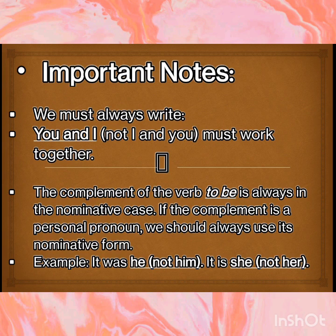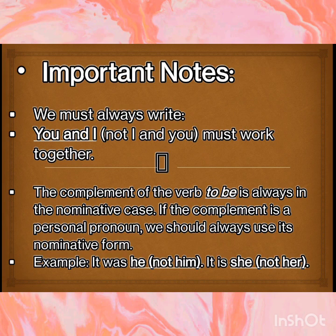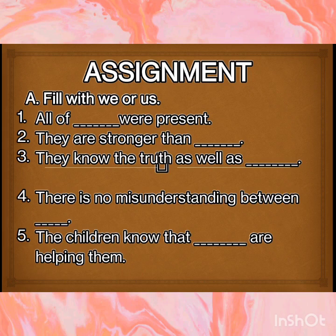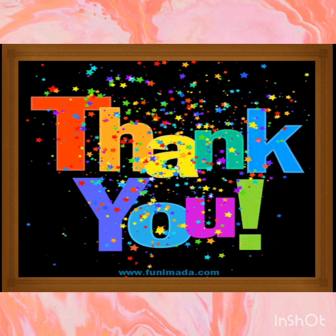The complement of the verb to be is always in the nominative case. If the complement is a personal pronoun, we should always use its nominative form. For example: It was he — we cannot use 'it was him'. It is she — we cannot use 'it is her'. An assignment has been given to you; kindly solve it to clear your concept of personal pronoun, number, gender and case. Thank you. I hope you have understood the concept of chapter number 8.